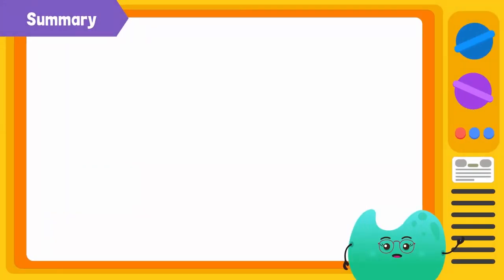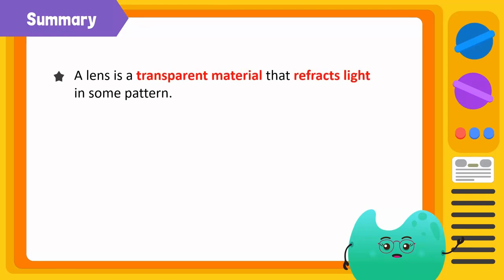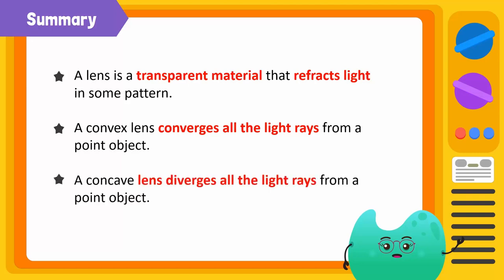Let's summarize what we have learned in this video. A lens is a transparent material that refracts light in some pattern. A convex lens converges all the light rays from a point object. And a concave lens diverges all the light rays from a point object.